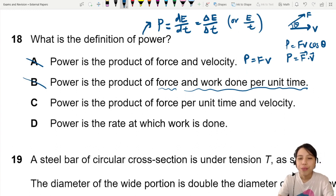C says force per unit time and velocity. No, no, no. Don't know what equation this is already. Force per unit time and velocity? Something strange.